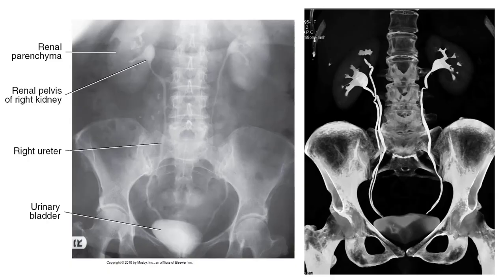Contrast studies of the urinary system are performed to demonstrate the renal parenchyma, and to do so effectively, contrast media is needed, followed by imaging either by x-ray or computed tomography. Two filling techniques can be utilized to visualize the urinary system – antegrade and retrograde. Lower concentrations are required for bladder studies because of the larger amount required to fill the bladder, and higher concentrations are used for excretory urography.